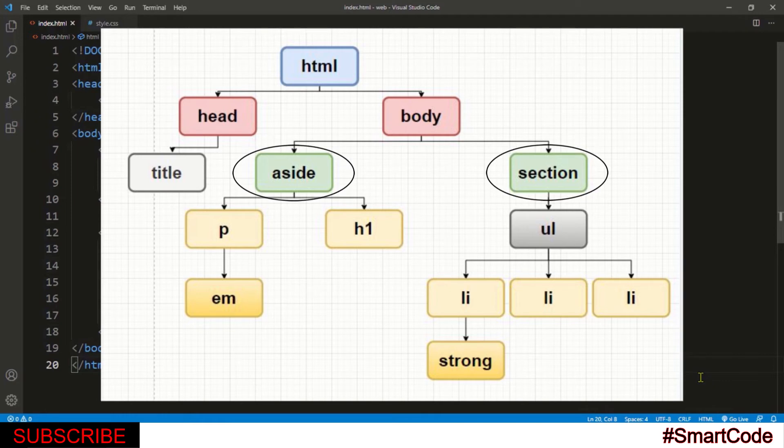Similarly, the body is parent to aside and section as they are directly descendant from the body. Let's go deeper to the tree and locate more parents and children.